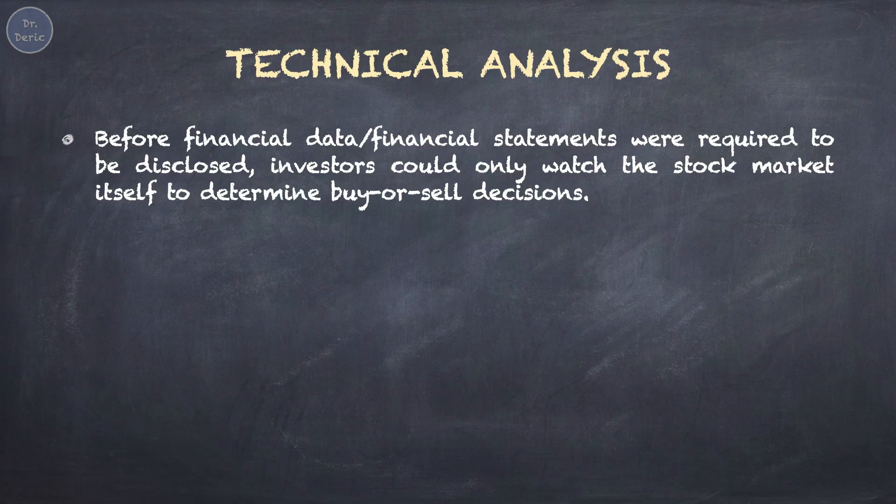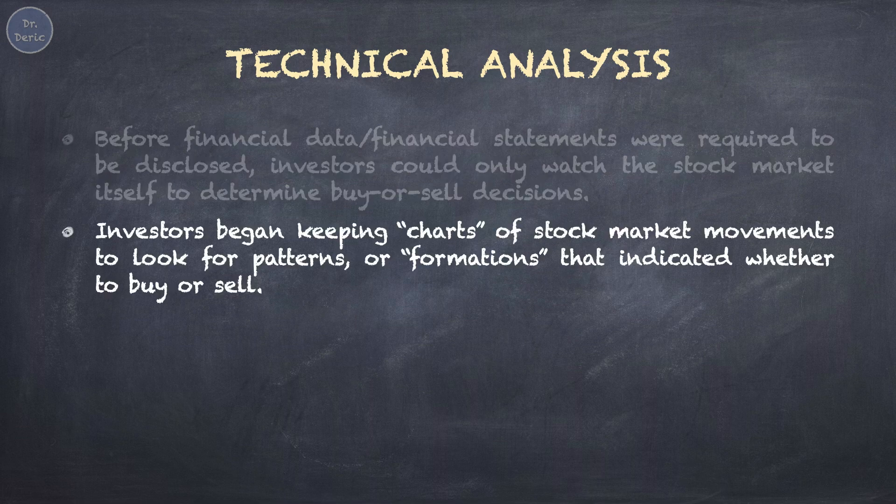Before financial data or financial statements were required to be disclosed, investors could only watch the stock market itself to determine buy or sell decisions. Information obtained from the financial statements, such as the income statements and balance sheets, are called the fundamentals. But fundamental factors are not always reflected in the market price. That's why investors began keeping charts of stock market movements to look for patterns or formations that indicated whether to buy or sell.